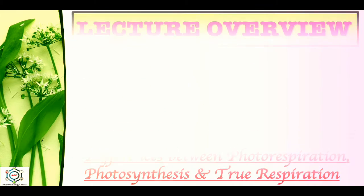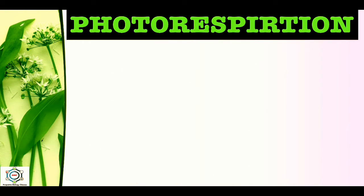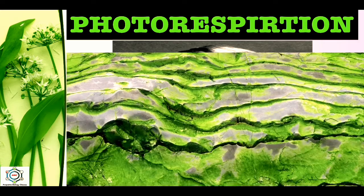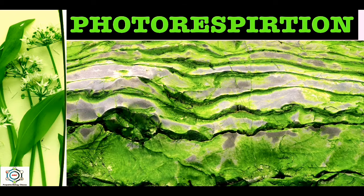Our first topic is Photorespiration. In 1920, Otto Warburg observed that the presence of excess oxygen in the atmosphere inhibits photosynthesis in green algae. Later on, this inhibition was observed in several green plants, and inhibition of photosynthesis by high oxygen level was termed the Warburg effect.